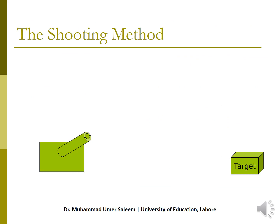Now, the shooting method. Let me explain this method with an illustration. Suppose a cannon is fixed on the ground, inclined at a certain angle, and we have a target. Our aim is to hit the target with the help of this cannon.